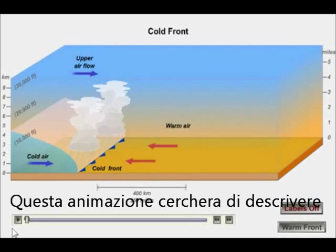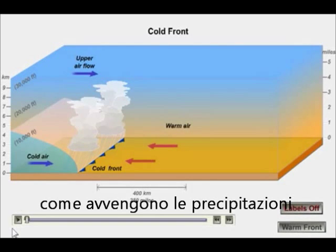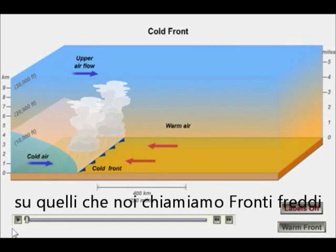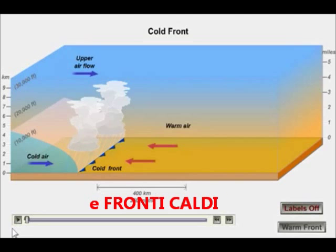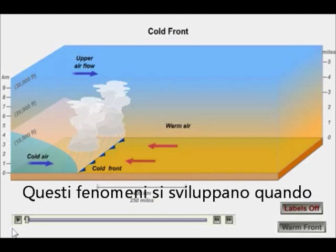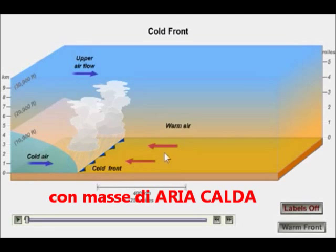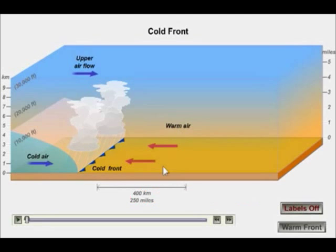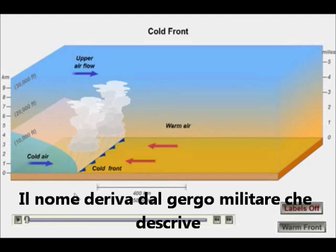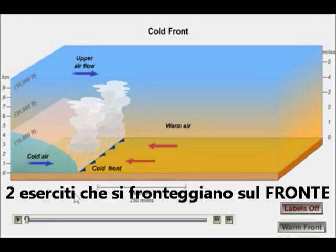This animation is going to describe how precipitation happens at what are called cold fronts and warm fronts. These are weather systems that develop wherever masses of cold air collide with masses of warm air. The name actually comes from war, where armies would meet along a battle line called a front.